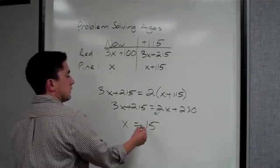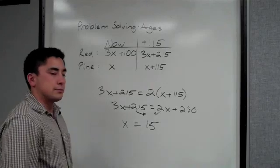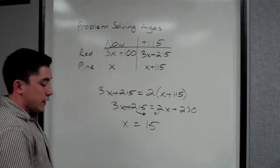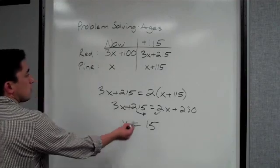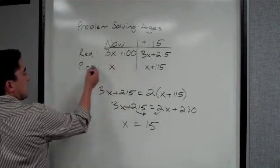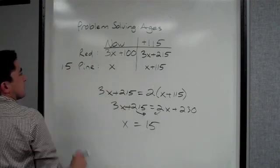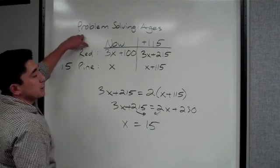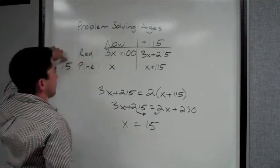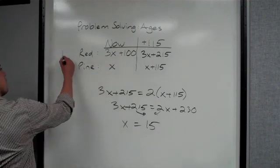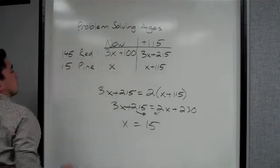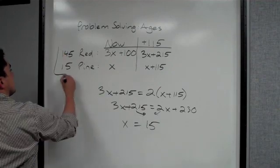So now it says X is 15. Find the age of each tree now. So therefore we know X is 15, so we know the pine tree is 15. The redwood tree is 3 times 15, which is 45 plus 100, so 145. So this would be your answer here.